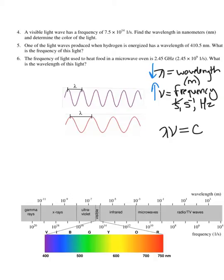What does frequency or wavelength have to do with the type of electromagnetic radiation? If you look at the whole electromagnetic spectrum, you're going to see that depending on the frequency and wavelength, it will change what type of wave you have. You can see wavelength at the top — really long wavelengths would be radio waves, a little bit shorter would be microwaves, a little bit shorter than that would be infrared, and then there's the visible region, which is a very small region of the entire electromagnetic spectrum.